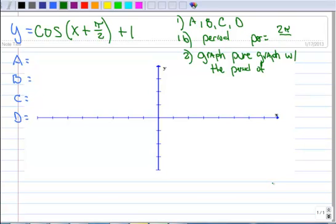All right, here's an example of graphing a cosine curve with phase shift and vertical shift.